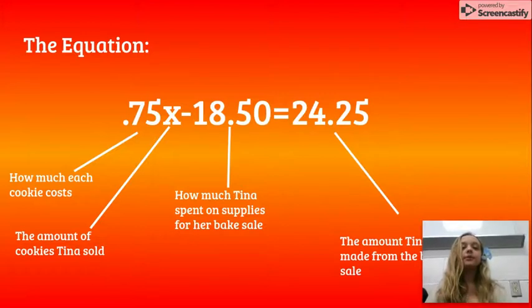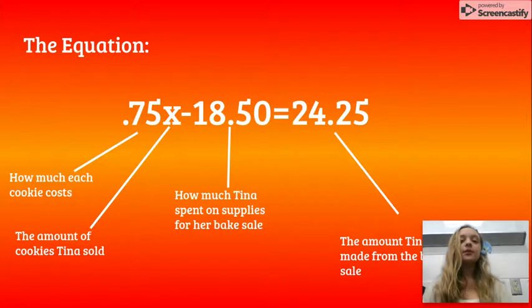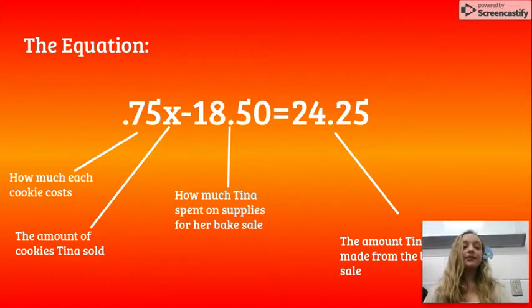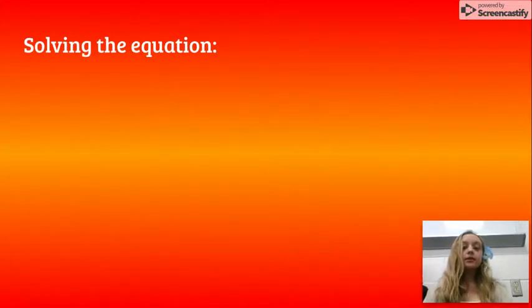The equation for this problem is going to be 24.25 equals 0.75x minus 18.50. In review: the 0.75 represents the cost of each cookie, the X represents how many cookies were sold, 18.50 is what was spent on the ingredients, and 24.25 was the amount made from the bake sale.